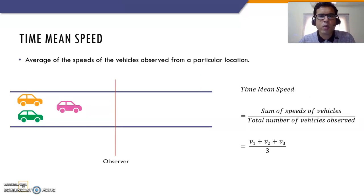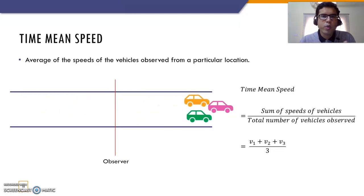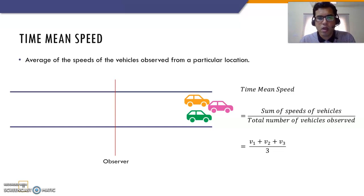There is something more I want to tell you — a very important concept, so please pay attention. There is something called time mean speed. You are standing on the ground and vehicles are flowing, and you observe them when they cross a particular line, like the red line you see here. You notice the spot speeds of individual vehicles — like the pink vehicle, the green vehicle, and the orange vehicle — and then you take the average. That gives you the time mean speed. To get the time mean speed you need to stand on the ground alongside the vehicles and observe from there.